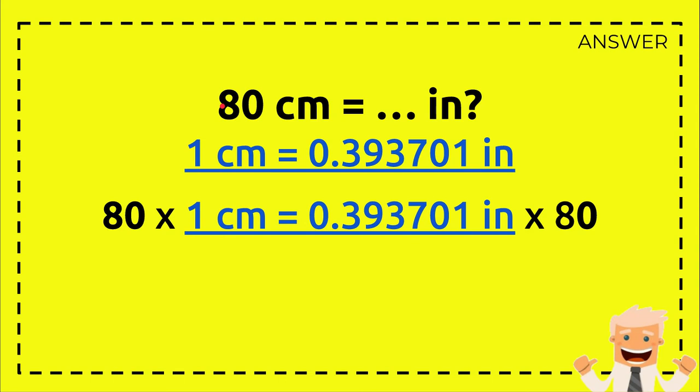Because the only number we have is 80 from the question, we need to make it equal. So because we have 80 on the left, we must have 80 on the right as well, which is why we have 80 here and here as well. And we'll multiply it with 1 centimeter and we'll multiply this 80 with this number.